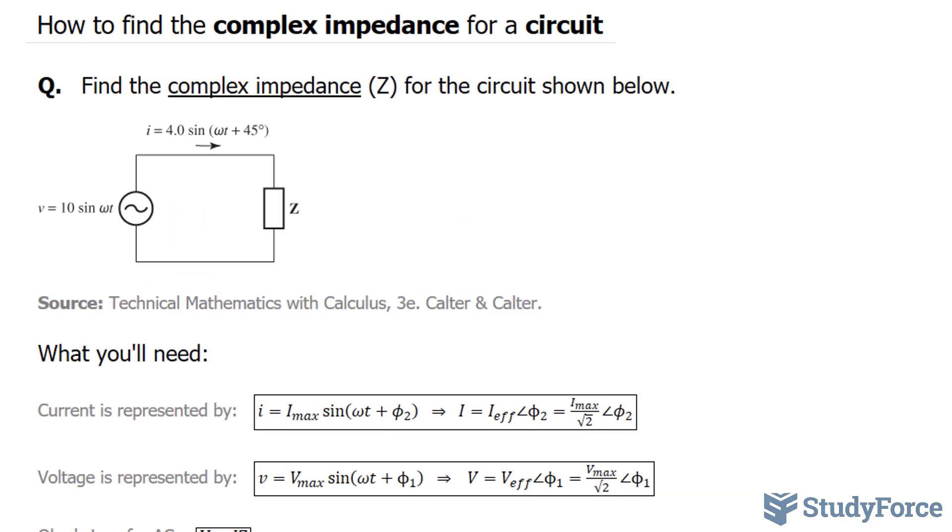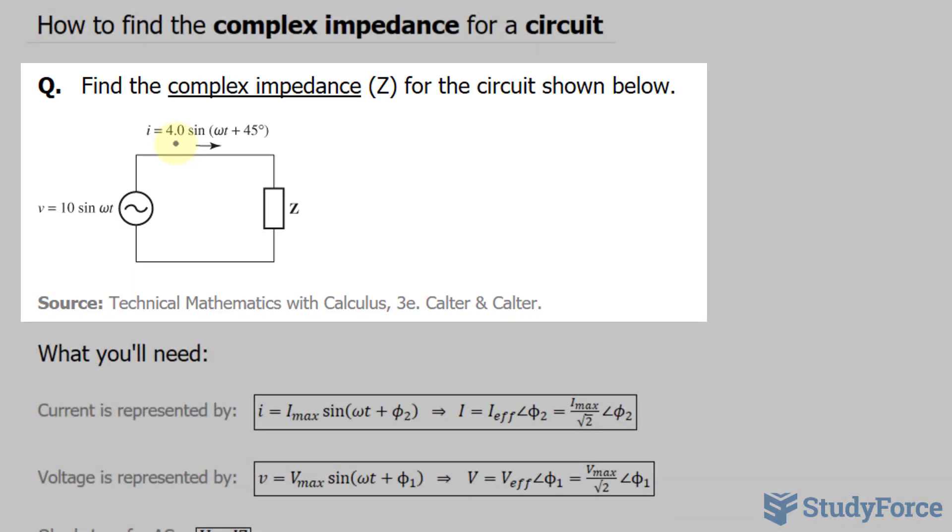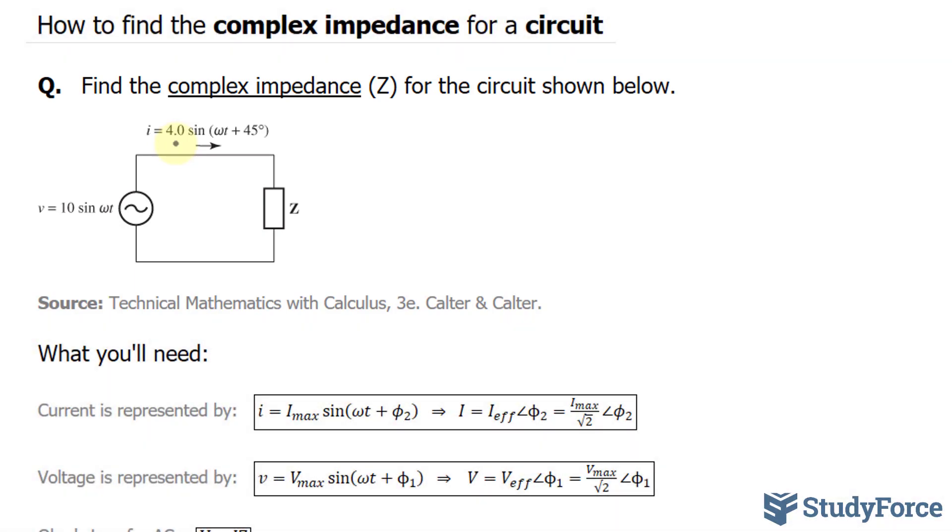In this video, I'll show you how to find the complex impedance for a circuit. The question reads: find the complex impedance Z for the circuit shown below. Take a look at the circuit. The current is 4.0 times sine (ωt + 45°), and voltage is represented by 10 times sine (ωt).